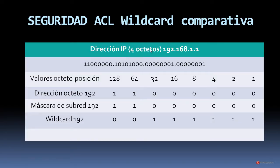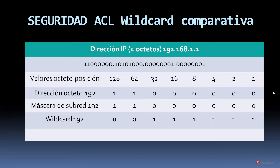Como veis, aquí tenemos en la parte superior la dirección IP formada por cuatro octetos, aquí en formato decimal y debajo en formato binario. Cada uno de esos bits binarios indica un valor decimal y esos valores decimales definen el formato decimal de la dirección IP, haciendo más cómodo trabajar con esas direcciones. En este caso tenemos ese 192 del primer octeto, formado por los valores binarios 128 más 64, cuya suma nos da ese 192, y el resto están definidos a 0.